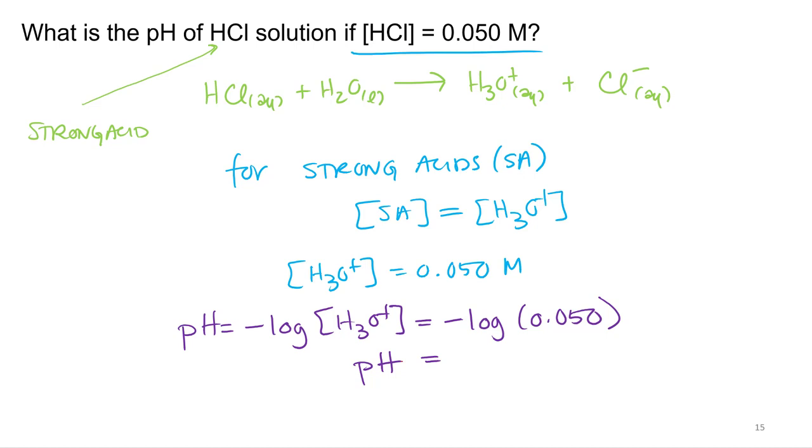What's that? 1.3. All right. So we just calculated our first pH of a solution. And for strong acid, it is that easy. Concentration of hydronium is equal to your concentration of your acid. 1.3.